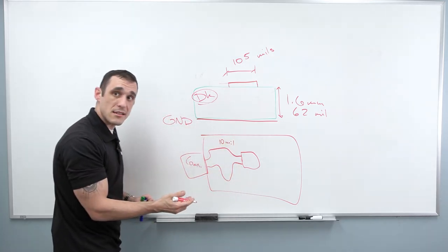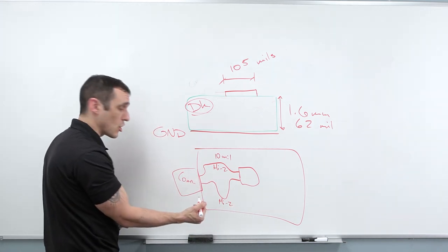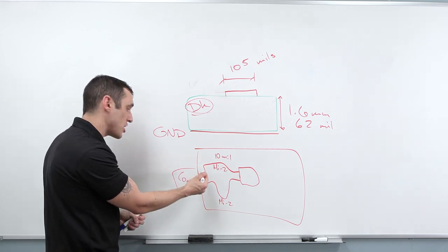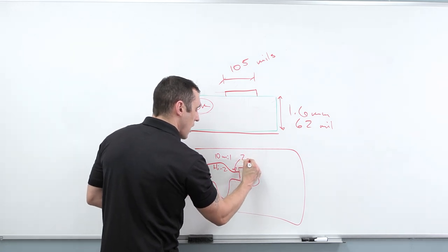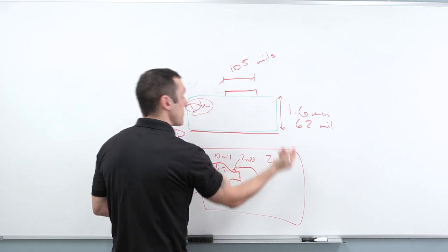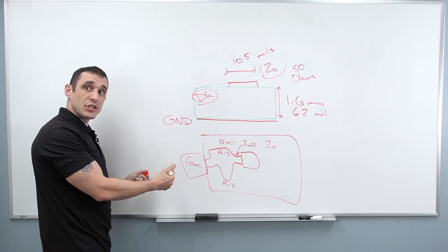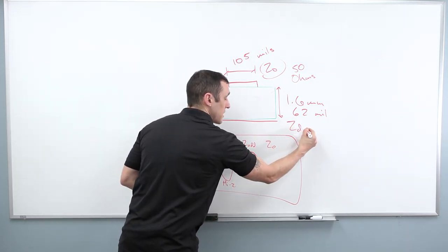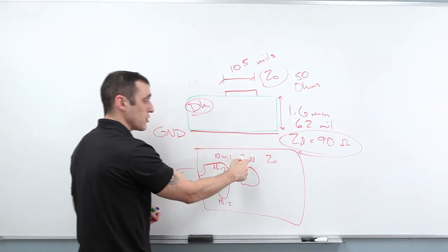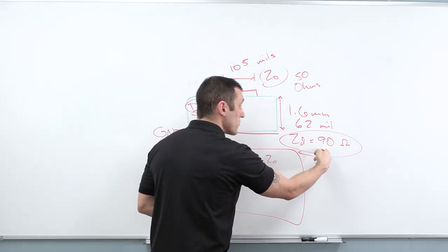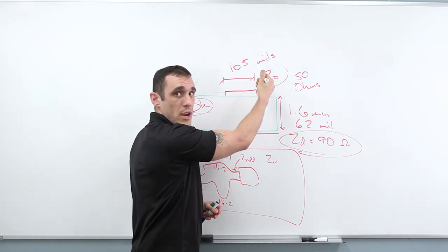If you naively used just a 10-mil wide trace, the impedance would be really high, creating a big impedance mismatch at the connector and causing a lot of reflections — the channel would likely not work. What we actually need is a differential impedance of 90 ohms, which means an odd mode impedance of 45 ohms. If you tried to route a single trace by itself to hit 45 ohms odd impedance on this stack-up, it would still be a really big trace. So we've got two options to figure out how to route the board.